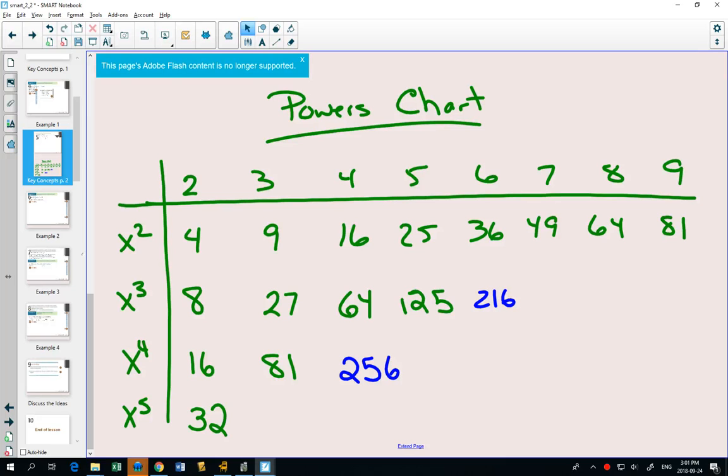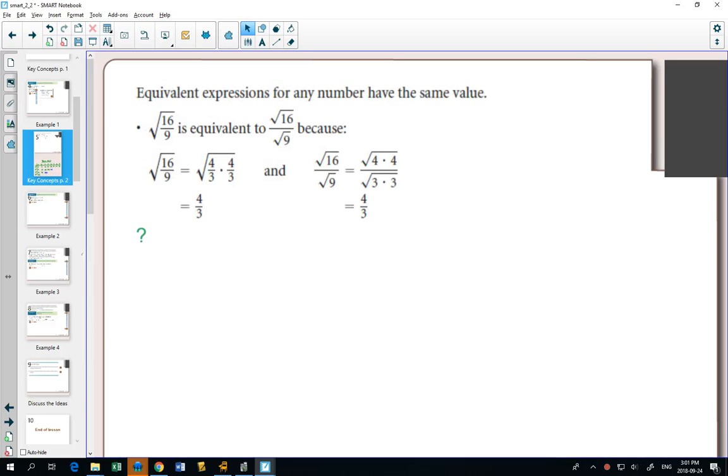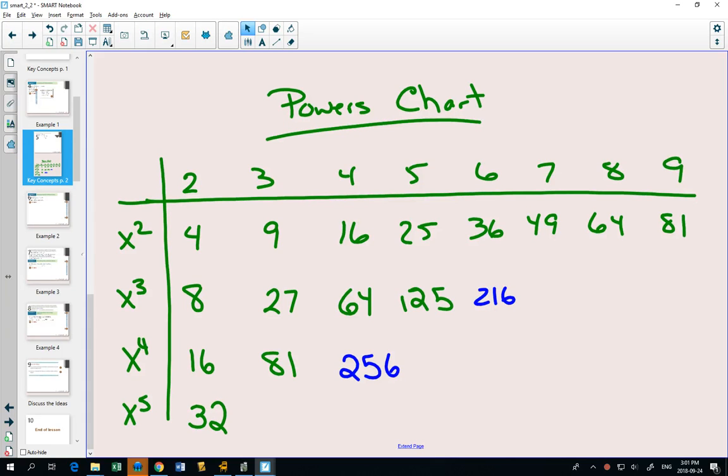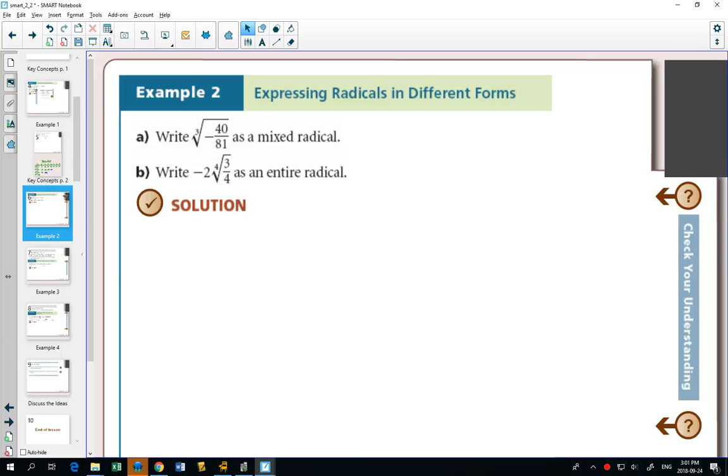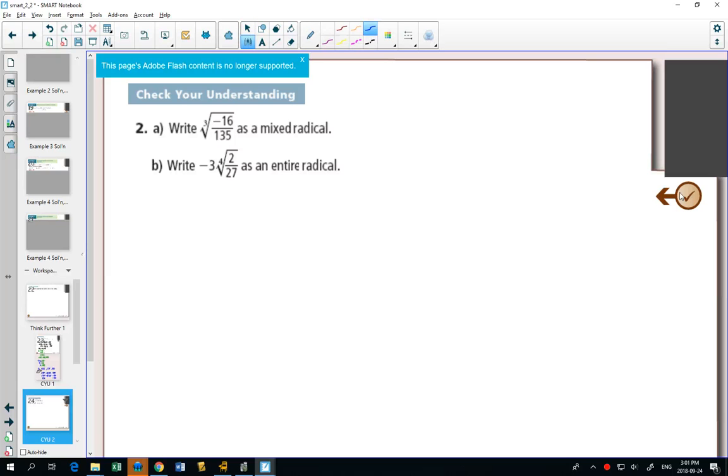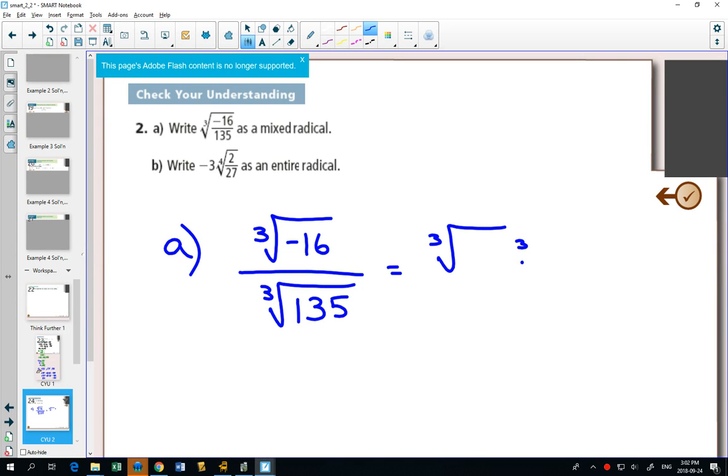And the reason we need to know them is for questions like example 2. Part A wants us to write it as a mixed radical. So we can use that division property to say, on the top, I would have the cube root of negative 16. On the bottom, I would have the cube root of 135.